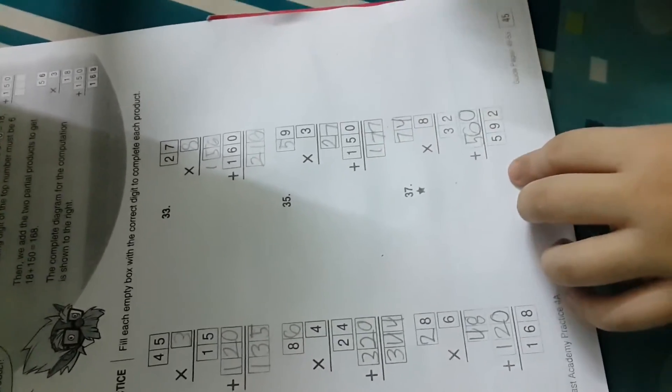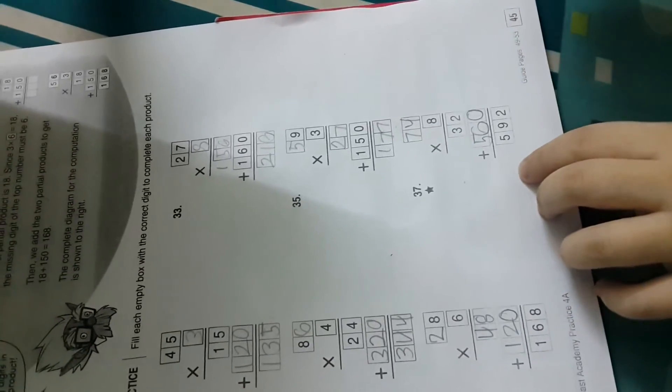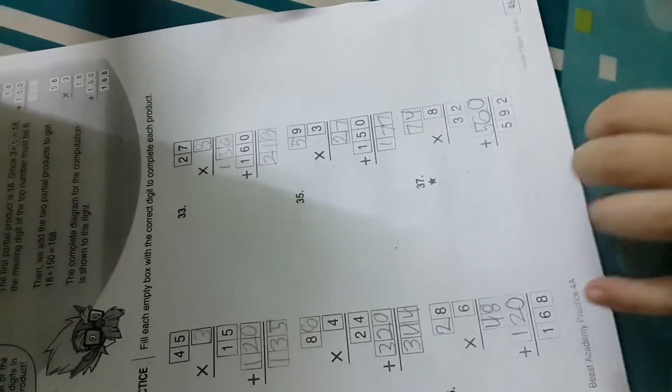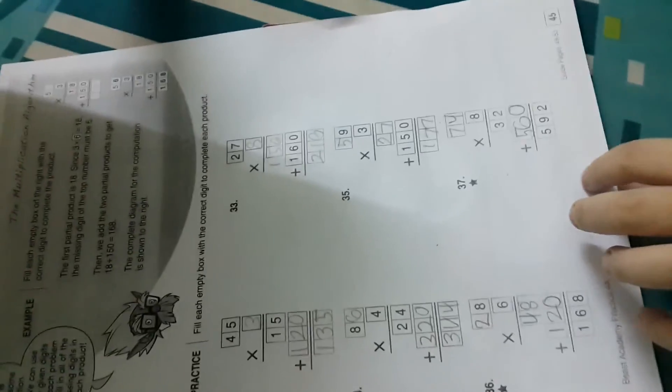Cool! So 8 times 74 is 592. You want to double check it? I know it, you already double checked. Okay, cool, good job! Those are awesome, those are pretty fun, huh?